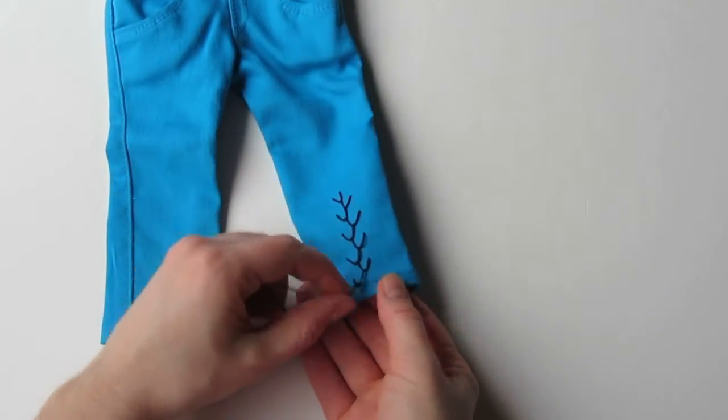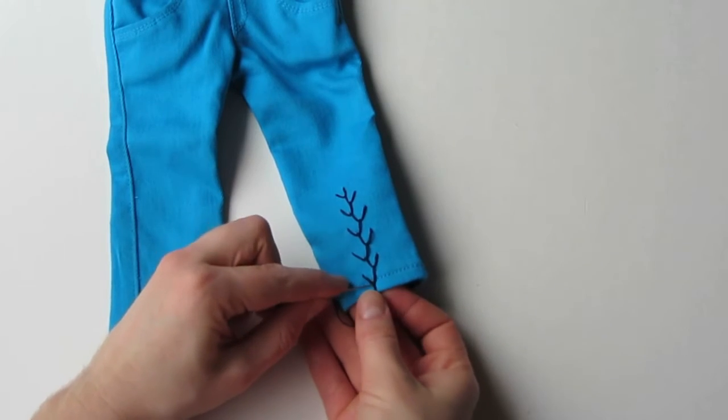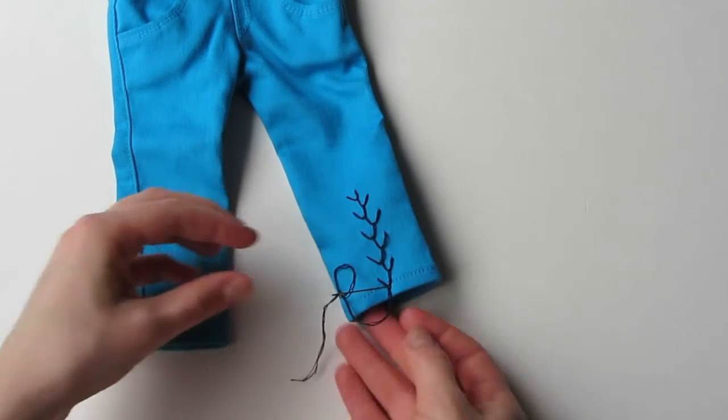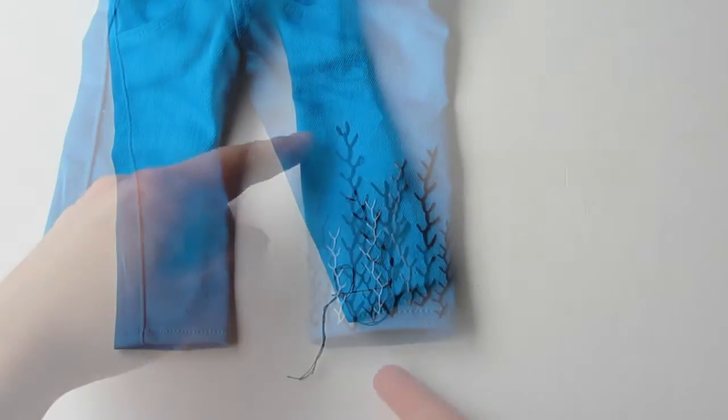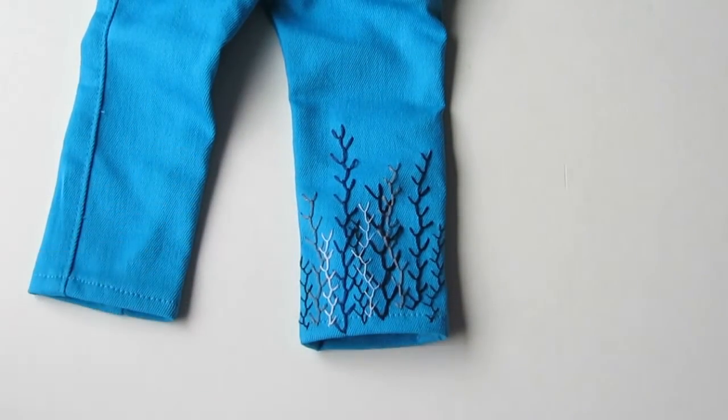When you reach the bottom, pull your thread tight and then stitch down on the other side of the last loop you formed. Tie a knot. Keep adding rows of feather stitching until you have the look that you want.